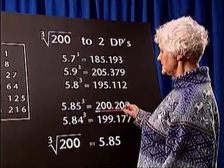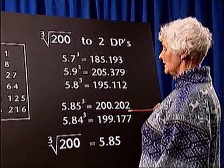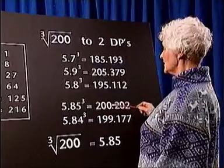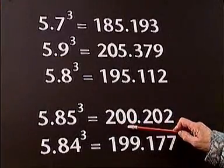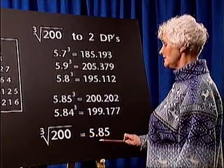We have now identified the two closest numbers to 200, but the nearer number is 200.202, so the cube root of 200 to two decimal places is 5.85.